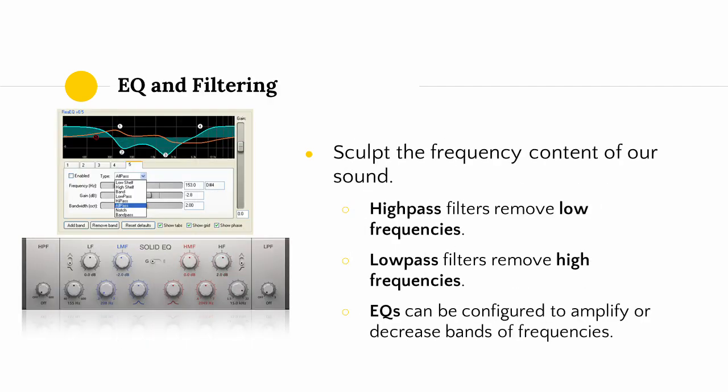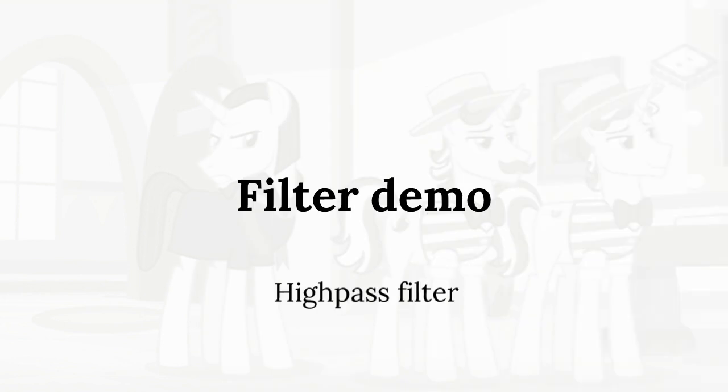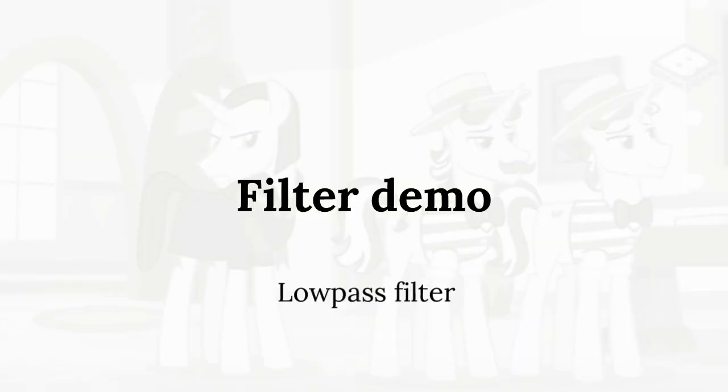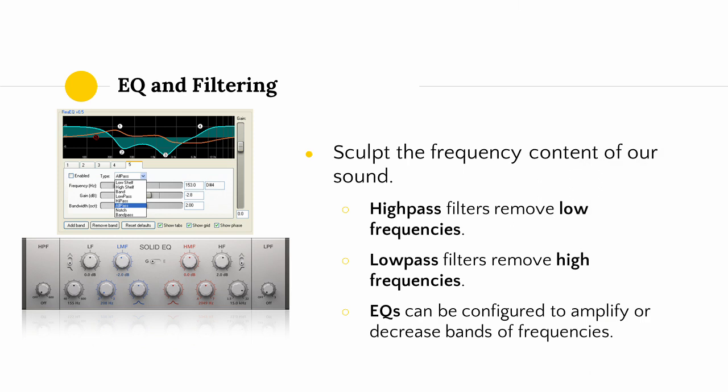Let's get to effects that allow us to manipulate the color of a sound: EQ and filtering. EQ and filter effects sculpt the frequency content of our sound. The two most basic kinds of filters are high pass filters and low pass filters. High pass filters allow high frequencies to pass but remove low frequencies. Low pass filters, on the other hand, remove high frequencies. EQs are essentially large arrays of filters that can be configured to amplify or decrease certain frequencies in a sound.